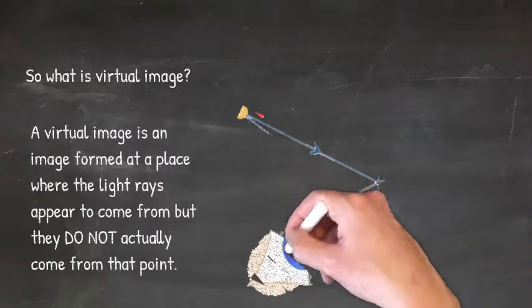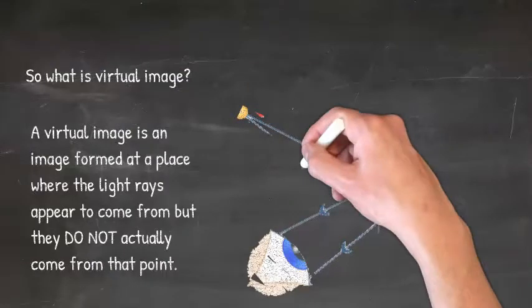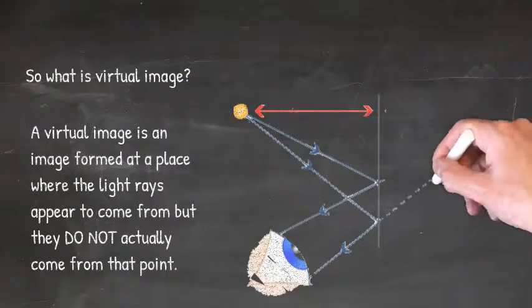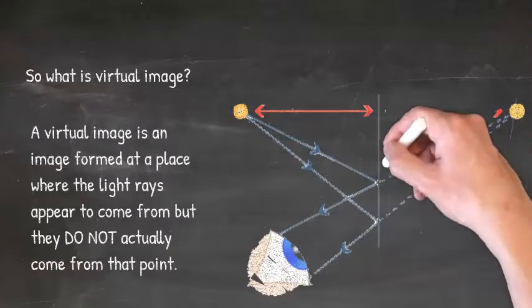If you look at this diagram, there are two reflected rays coming from the point object in the left hand side. They are reflecting off the mirror and entering the observer's eye.